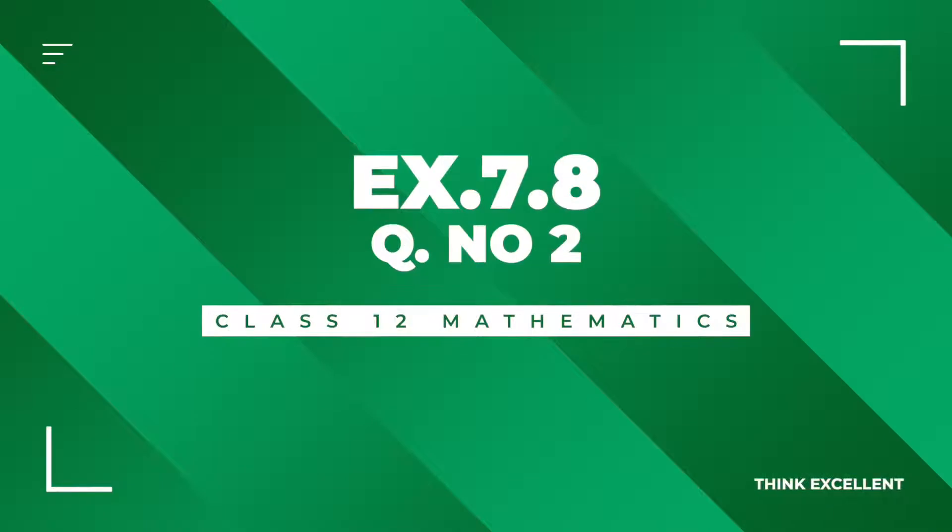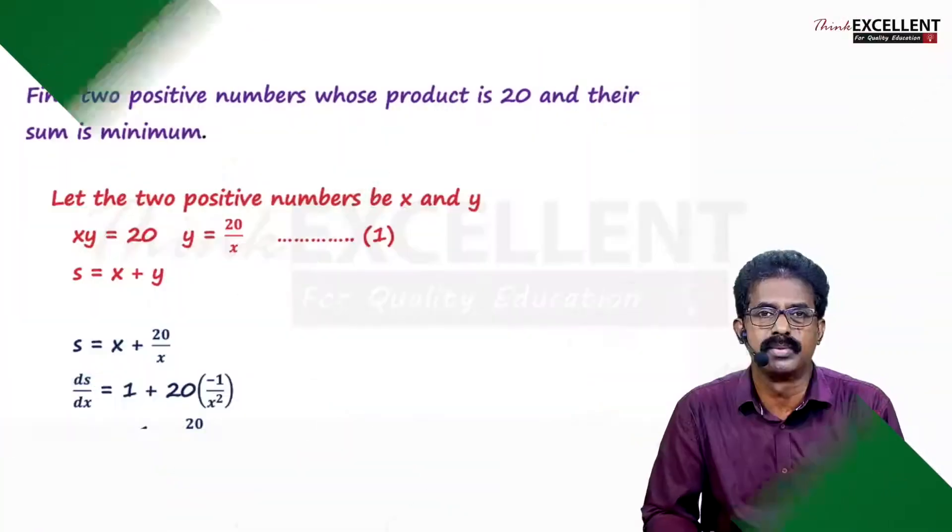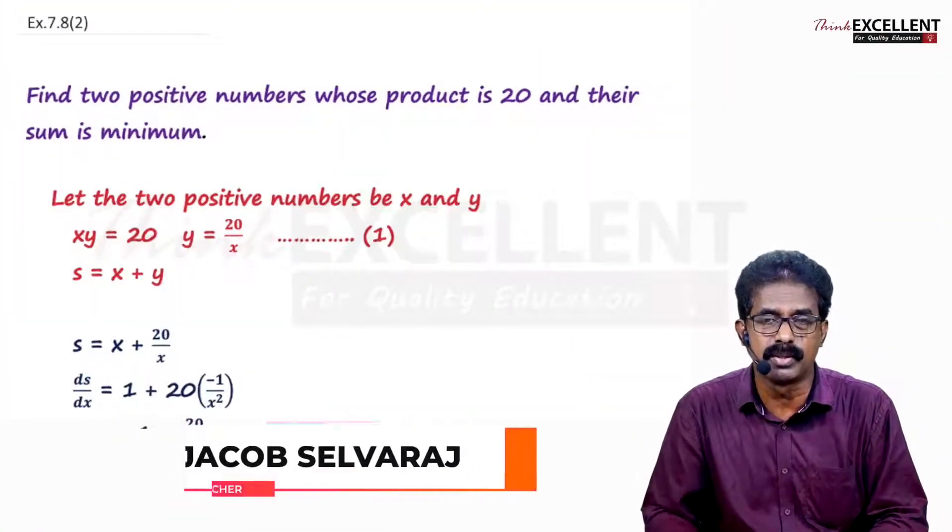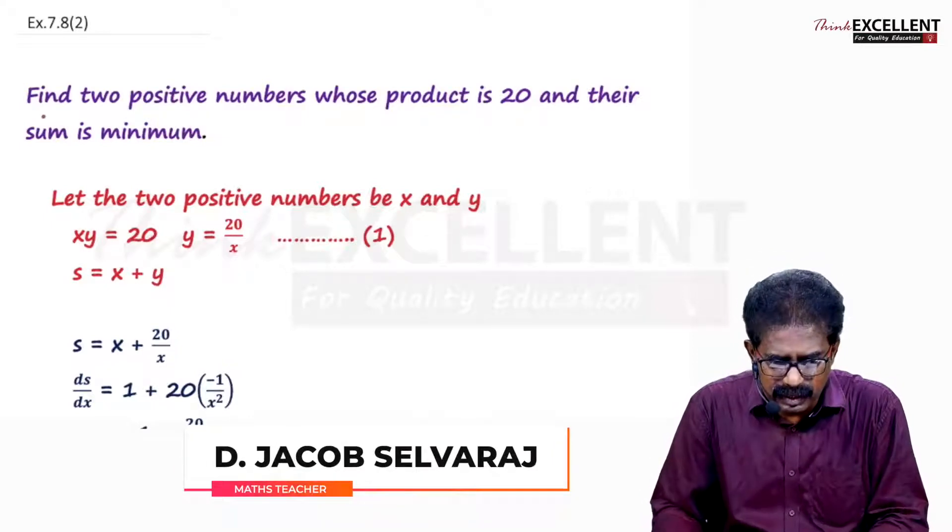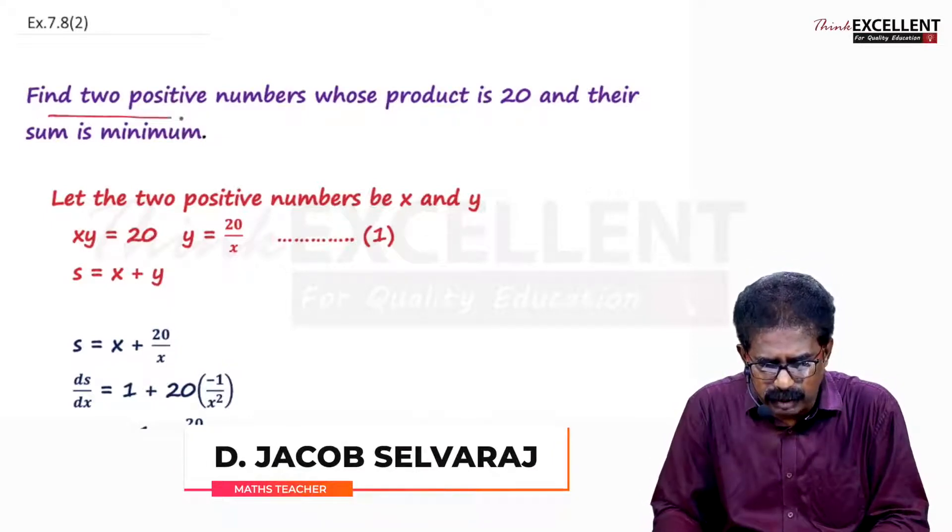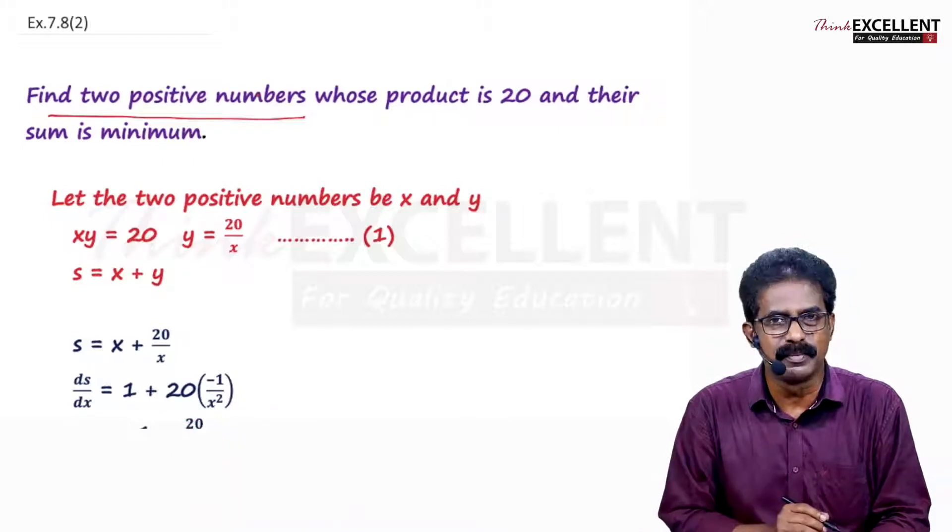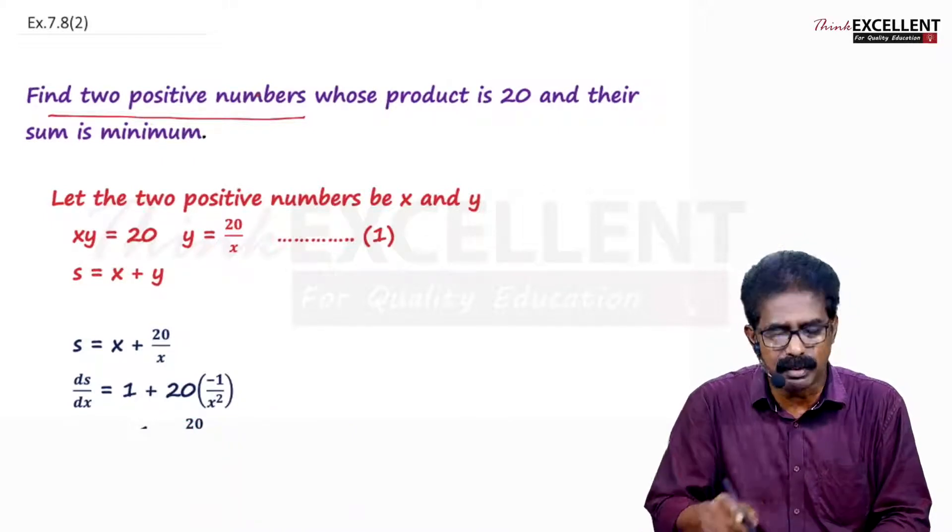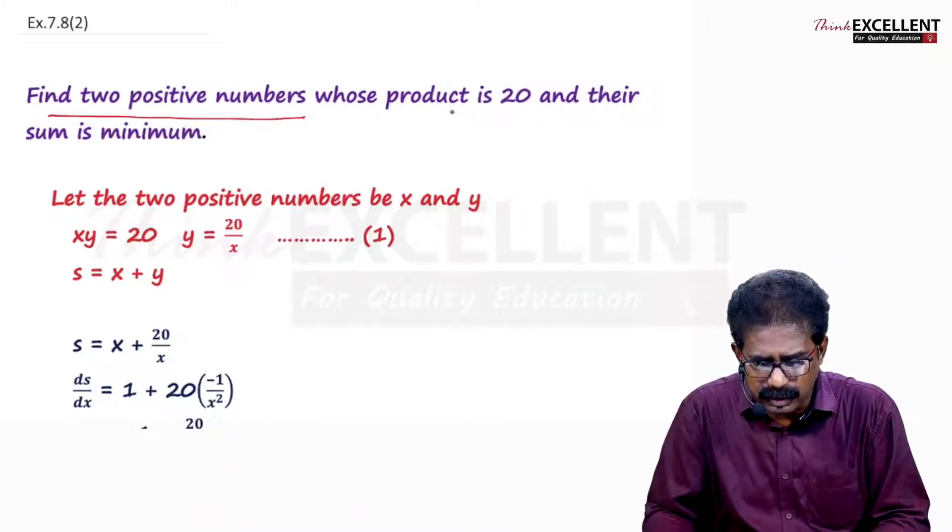Now let's move on to the next question. It is just the reverse one, so you should not confuse with the questions. Please listen very carefully. Here you see find two positive numbers. Let the numbers be x and y. The previous question said the sum is 10, but here whose product is 20?